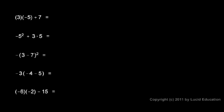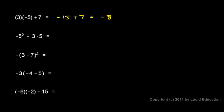Here we have 3 times negative 5 plus 7. We do the multiplication before we do the addition. So 3 times negative 5 gives me negative 15, and then I also have the plus 7. Negative 15 plus 7 gives me negative 8.